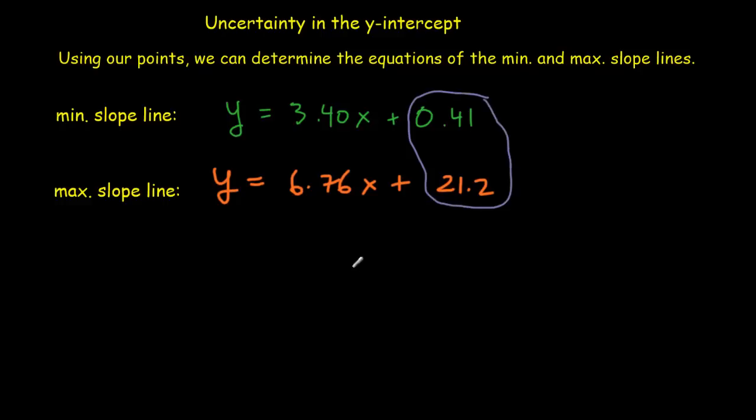And so you'd want to notice here that our y-intercept lies somewhere between 0.41 and 21.2. And you want to notice there that the origin is not within that range. So it's telling us something quite important, that we have really determined that the origin should not be on that curve as a straight line. And we've got to come up with an explanation for that.